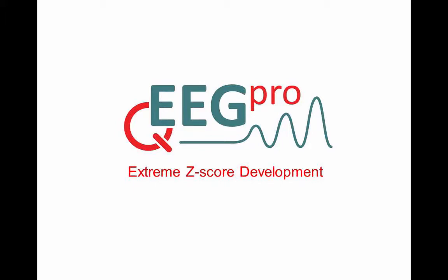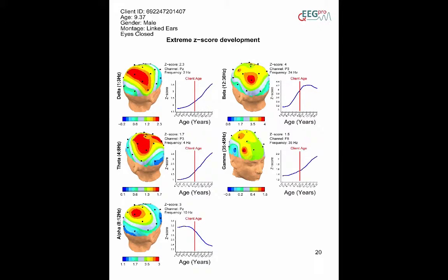Extreme z-score development. The extreme z-score development analysis is based on absolute power deviances and consists of two parts.